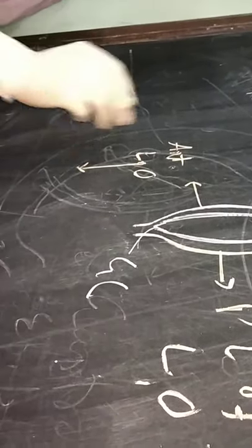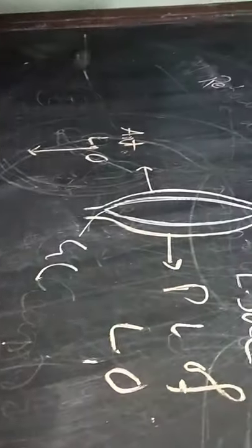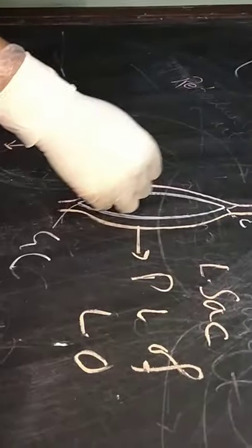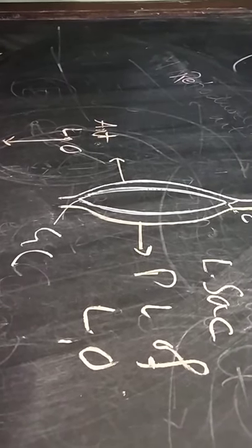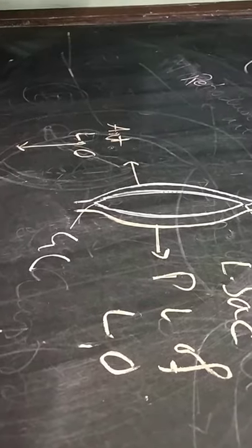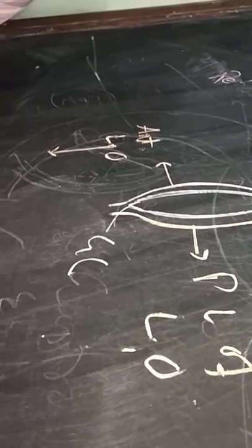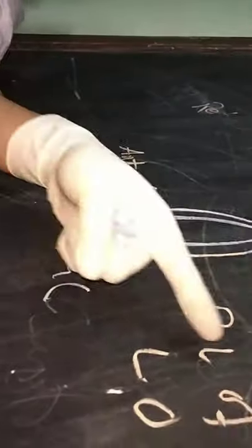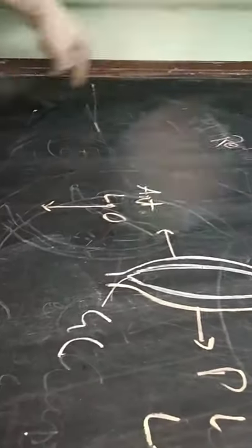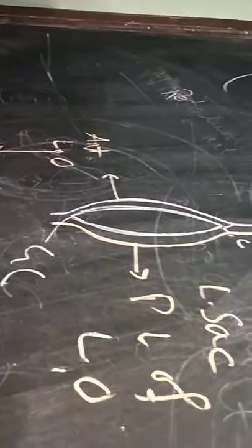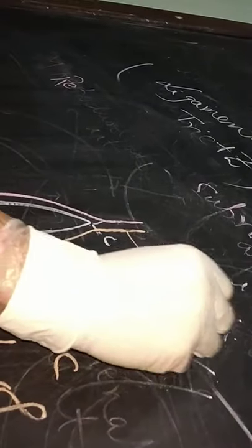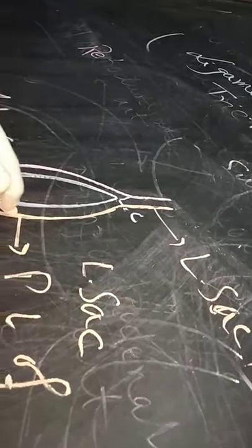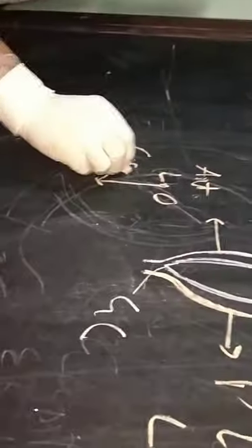The anterior layer and posterior layer of the lesser omentum are coming from two different sacs of the peritoneal cavity. The lesser sac exists only behind the stomach; the rest of the cavity is made up of the greater sac. So the posterior layer is coming from the lesser sac, whereas the anterior layer is coming from the greater sac. This is the most important point.